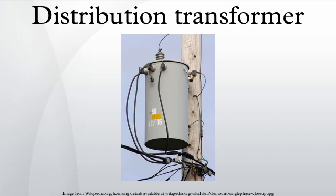Distribution transformers are normally located at a service drop, where wires run from a utility pole or underground power lines to a customer's premises. They are often used for the power supply of facilities outside settlements, such as isolated houses, farm yards, or pumping stations at voltages below 30 kV.